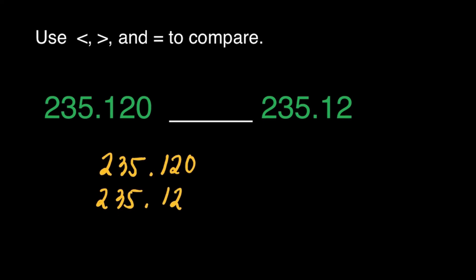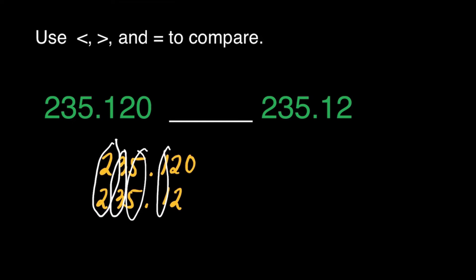Starting from the left, we have to find the first place where the digits differ. In each place — the whole number digits and the decimal digits — they are the same. Except for the final digit: 0 versus nothing. Since 0 is equivalent to nothing, we can say our answer for this question is equal. Question number 3: 235 and 120 thousandths is equal to 235 and 12 hundredths.